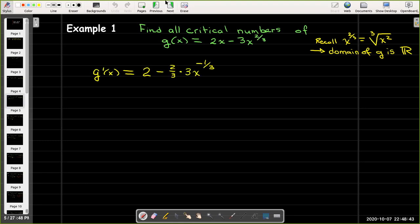So taking the derivative, I'll just use the power rule. I'll get 2 minus 2 thirds times 3x to the power of negative one third, which I will rewrite as 2 minus 2 over x to the power of one third.